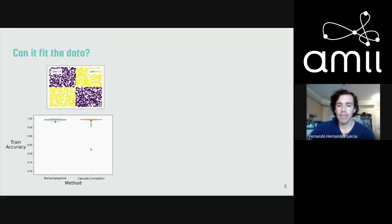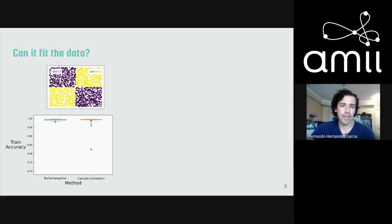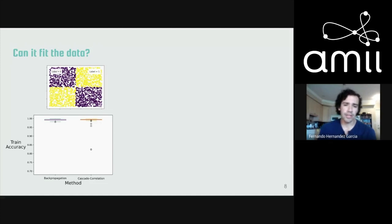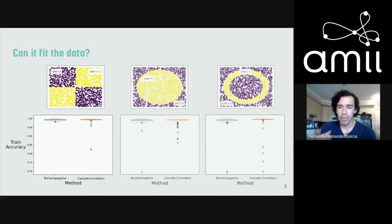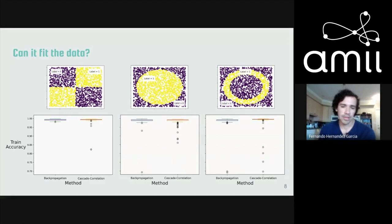Here is the training accuracy of cascade correlation and the backpropagation network on the XOR domain. We can see that both networks are perfectly fine at fitting the data, although cascade correlation does show a few more outliers. We see a similar result in the egg and ring domains — both networks fit the data well, but cascade correlation shows a few more outliers than the backpropagation network. I'll say a little more about those outliers later.